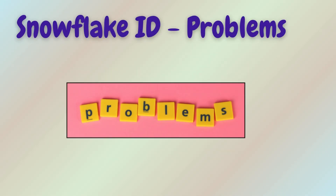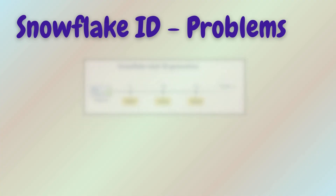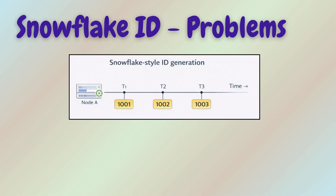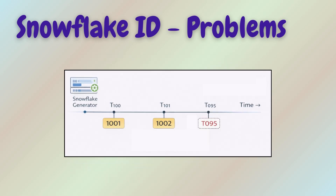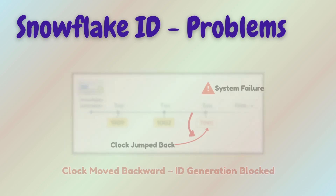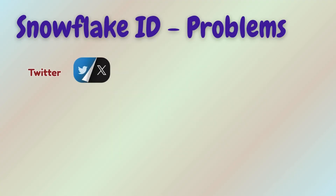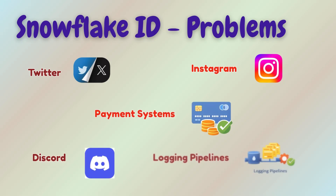But is this approach perfect? There are a few problems. First, clock skew causes ID jumps — if the system clock moves backwards, the system fails. This approach requires NTP time sync. Some real-world systems using Snowflake variants are Twitter, Instagram, Discord, payment systems, and logging pipelines.